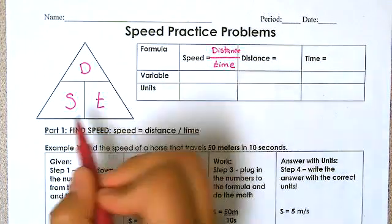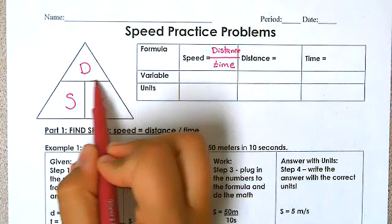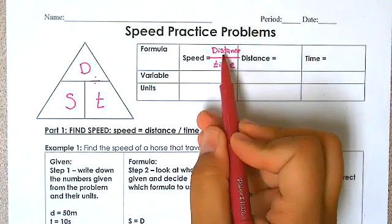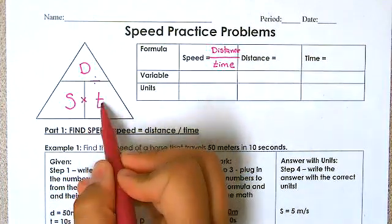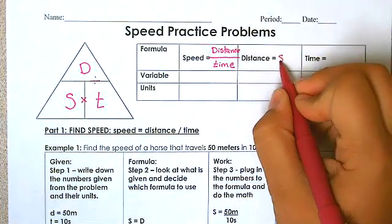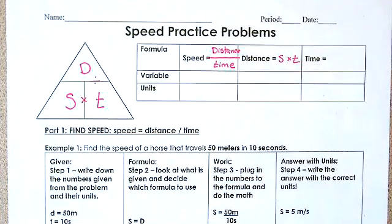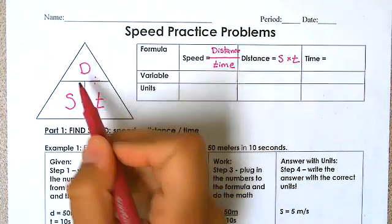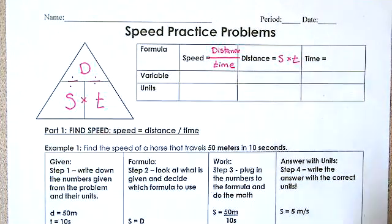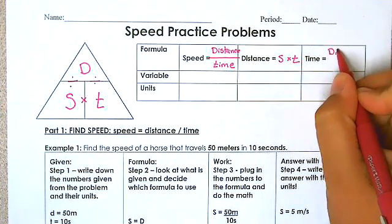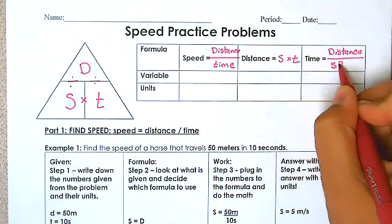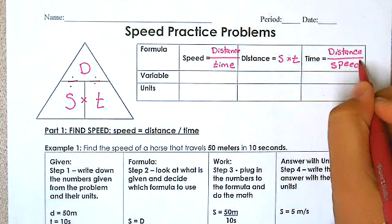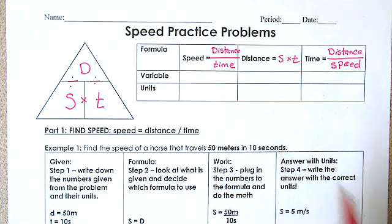To rearrange it: speed equals distance divided by time. If we're looking for distance, distance is speed times time. If we're looking for time, it's distance over speed. That's how this math triangle works.